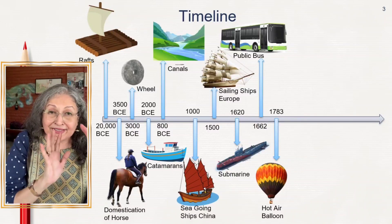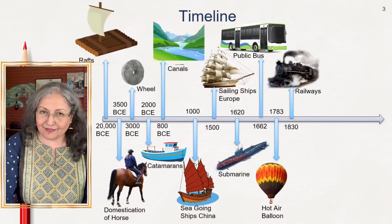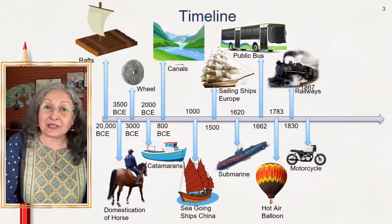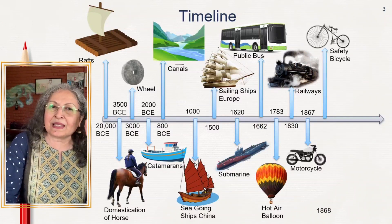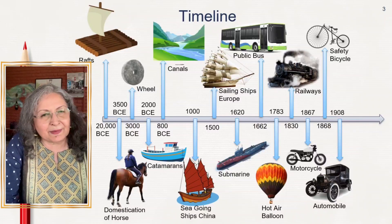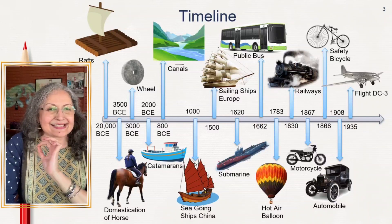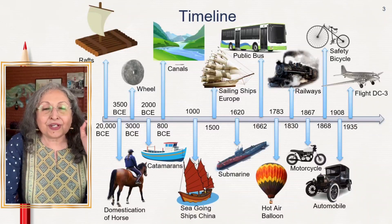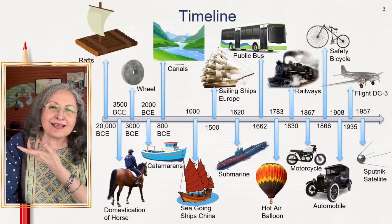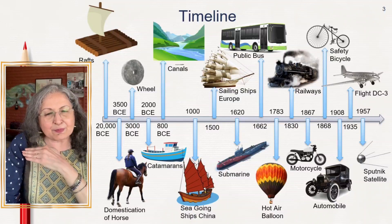They took to hot air balloons, and then the railways and steam engine came — it might seem like the motor car came first, but actually the steam engine came first. Then came the bicycle, the safety bicycle, the motorcycle, and after that Ford Motors brought out the motor car in 1908. Then came flight, conquering the skies. Remember, the dates, pictures, and events are all important on a timeline — students will be able to recall this information, and it will go into long-term memory.